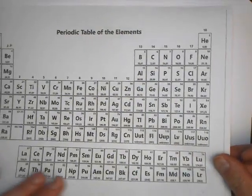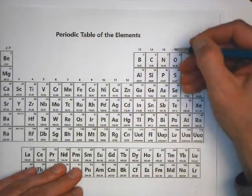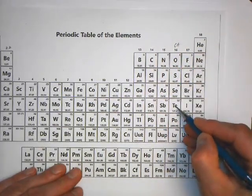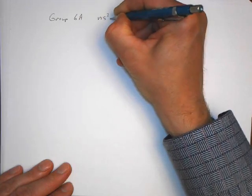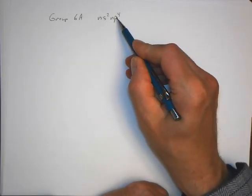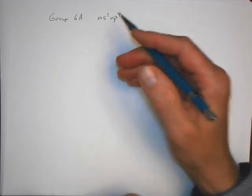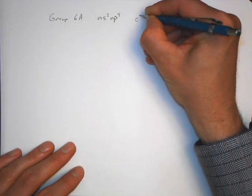Now we have Group 6A: oxygen, sulfur, selenium, tellurium. These have electronic structure NS2 NP4. In this case, it's easier for them to gain two electrons than it is to lose four or six electrons to get a stable core. These are called the chalcogens.